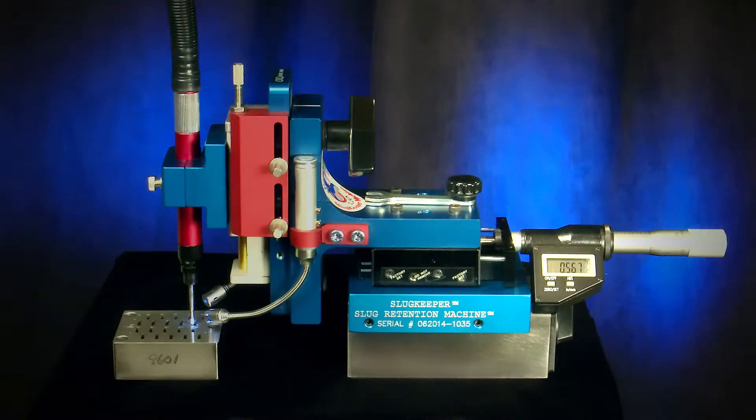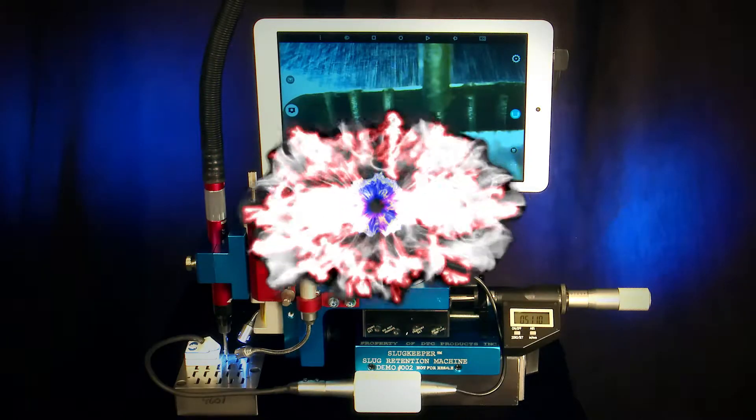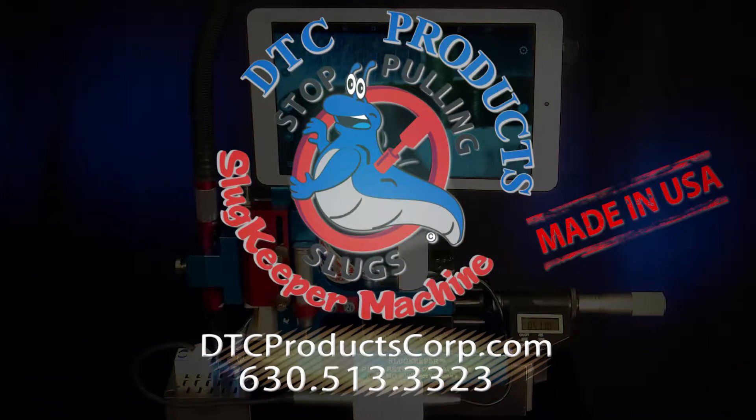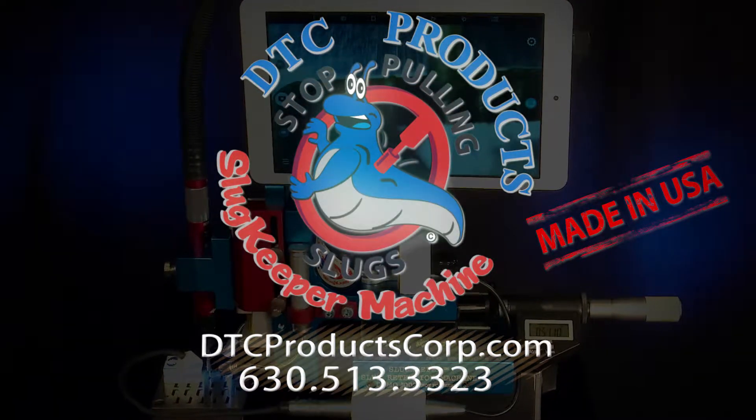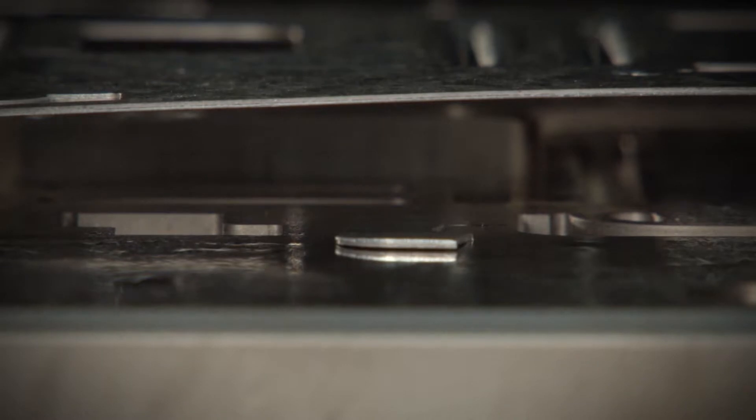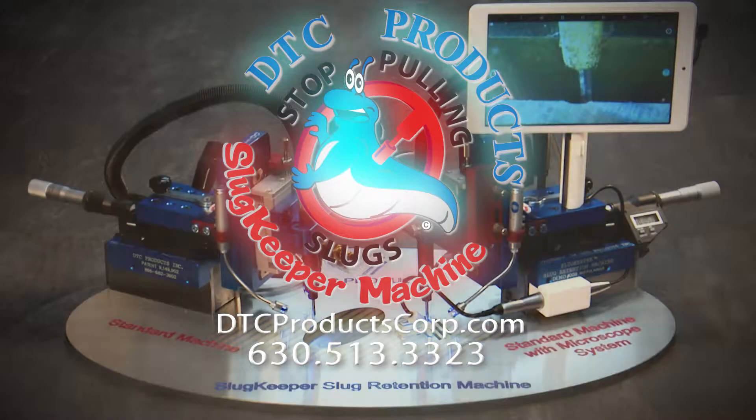Put an end to the costly delays, lost productivity and rejected parts. Call DTC Products today and learn how you can order your own slug retention machine. Like slugs in the garden, slugs in the stamping process are part of the landscape. Keep them under your control with the slug keeper.